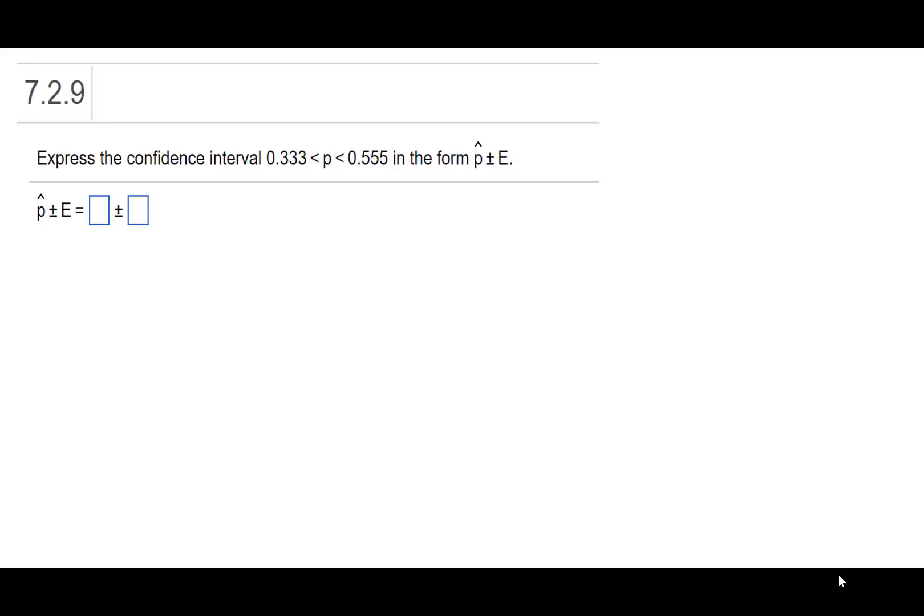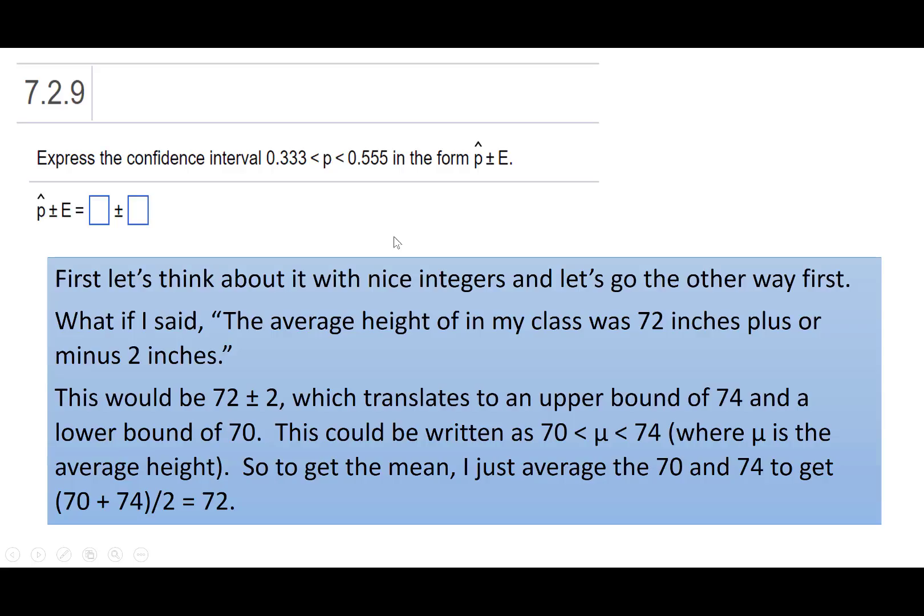When we run confidence intervals, you want to be pretty comfortable going back and forth between these two forms. I'll be honest, it's a little bit easier on the brain to go from the plus minus notation to this double inequality, where p is in between 0.333 and 0.555.